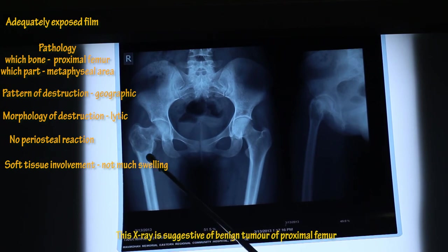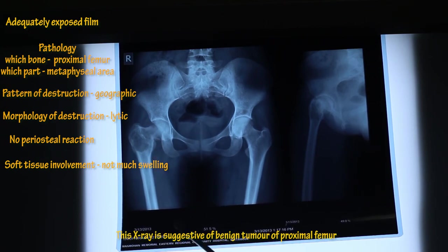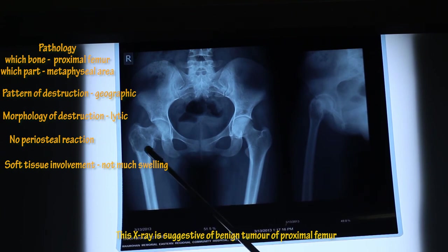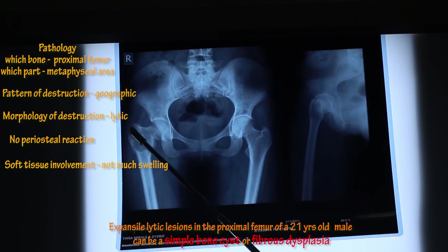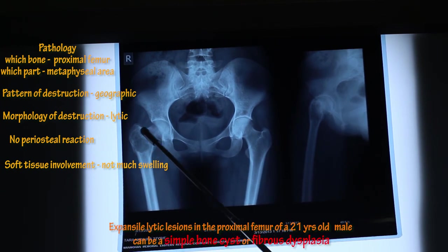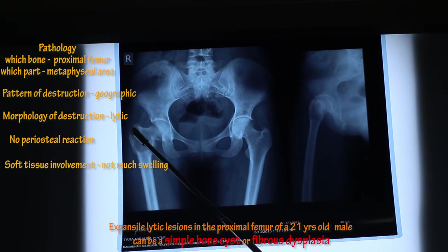So it looks like a benign tumor of the proximal femur. Age is very important because certain ages have a predilection for certain tumors. This is an expansile lytic lesion in the proximal femur of a 21-year-old male. So this can be either a simple bone cyst or fibrous dysplasia.